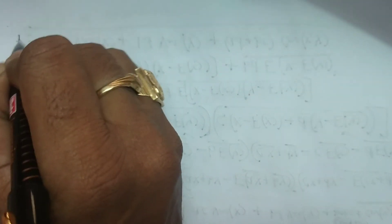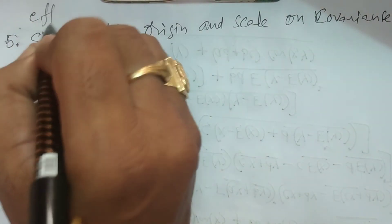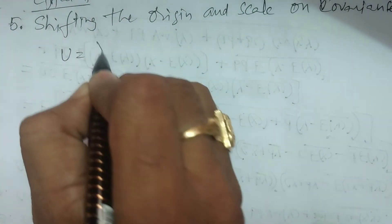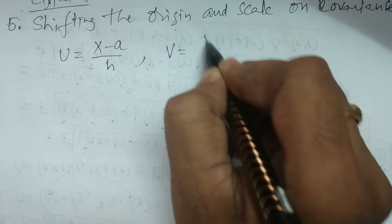Property number five: the effect of shifting the origin and scale on covariance. Consider u = (x minus a) / h and v = (y minus b) / k. Since covariance involves two variables, we define both u and v.